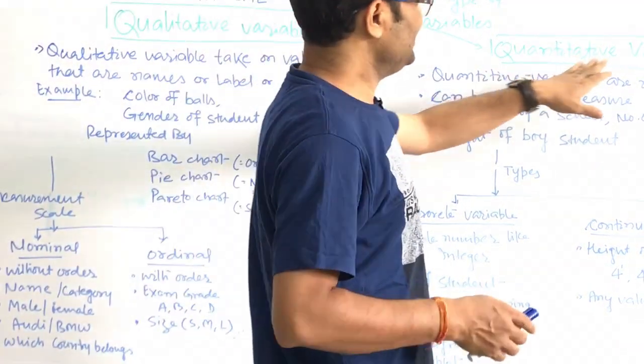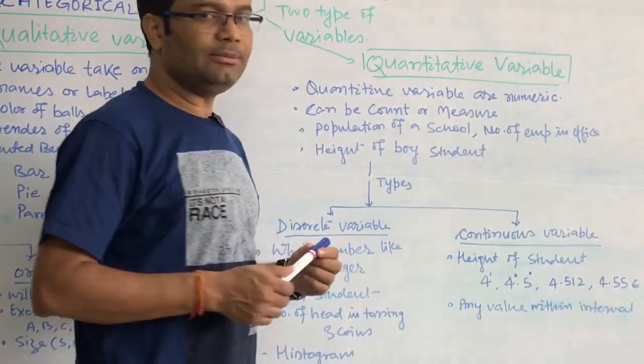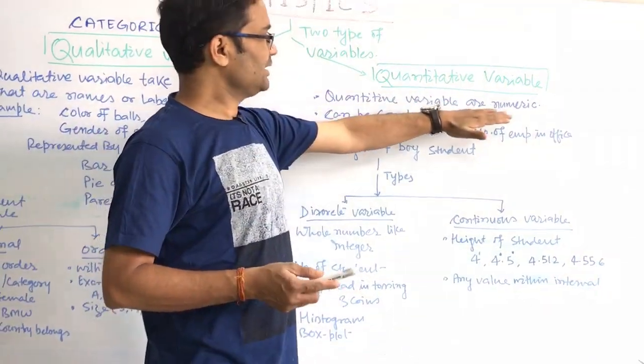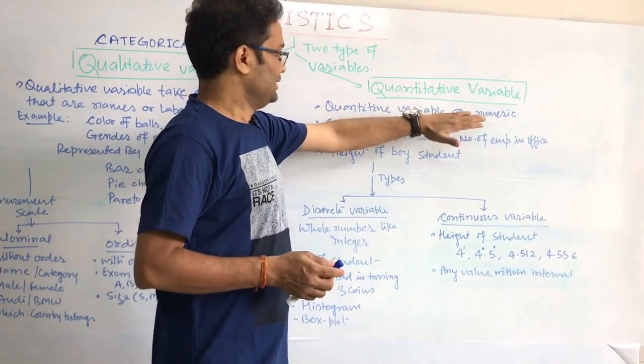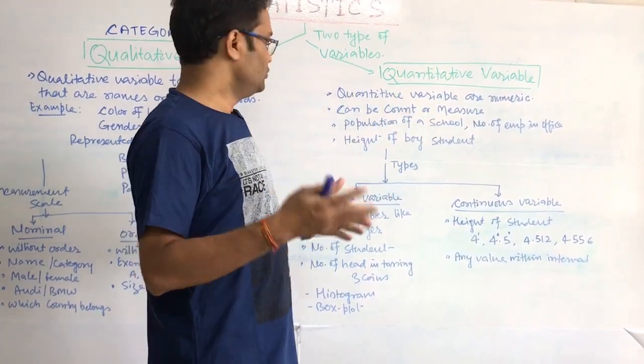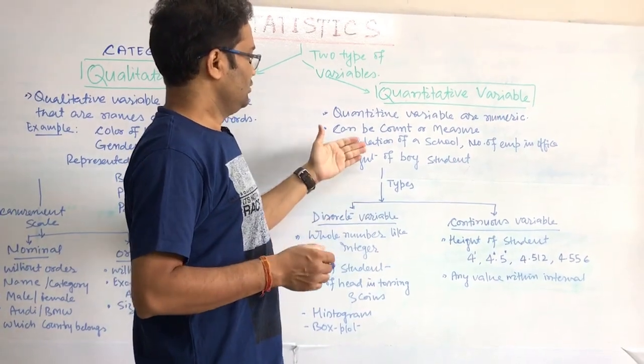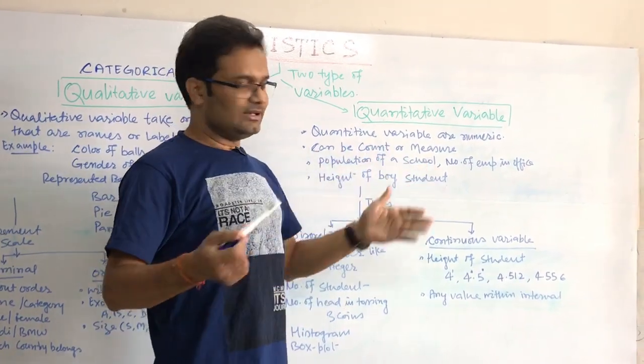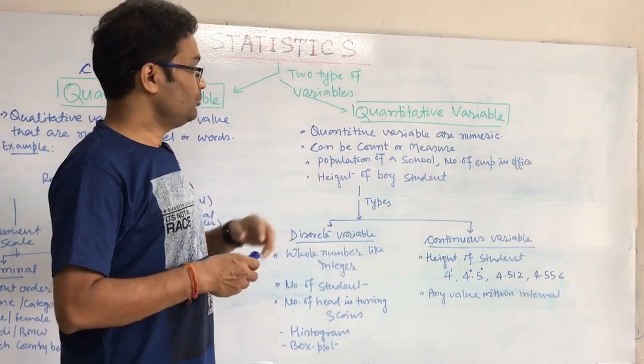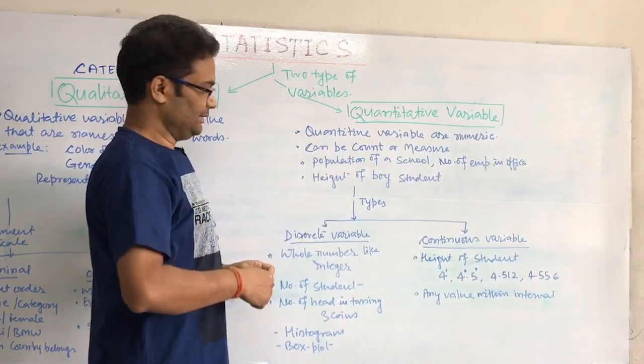Now, come to quantitative data. Quantitative, where number matters, no category, just number. Any numerical data is called quantitative variables. That can be countable or measurable. For example, population of a school or number of employees in office, height of a boy student, this kind is called quantitative.